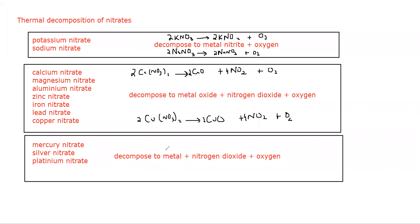If mercury nitrate or silver nitrate is there, when we supply heat energy, they will give the metal plus nitrogen dioxide plus oxygen. So if we have silver nitrate, AgNO₃, and we supply heat energy, it will form silver metal, nitrogen dioxide (NO₂), and oxygen.